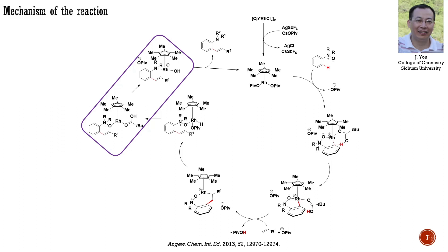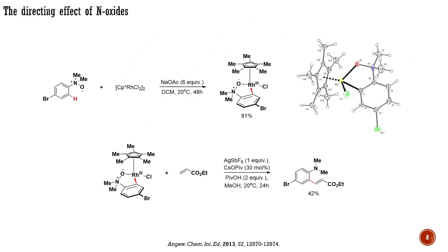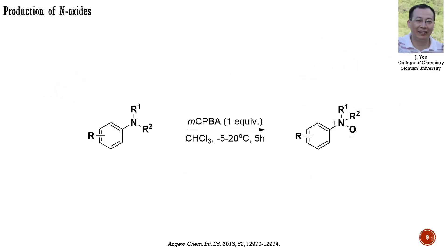This process is accompanied by the release of the ortho-olefinated aniline. The directing effect of N-oxides was demonstrated by isolating the cyclometallated intermediate presented here, which, in the presence of acrylate, leads to the formation of olefinated aniline in a 42% yield. The preparation of starting N-oxides is quite simple and can be achieved by oxidizing aniline derivatives with meta-chloroperoxybenzoic acid.